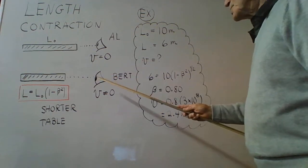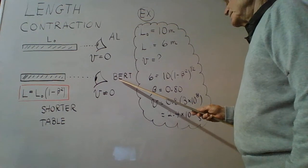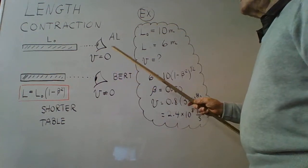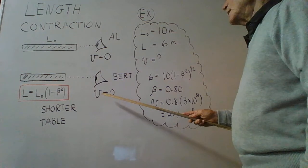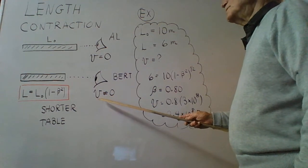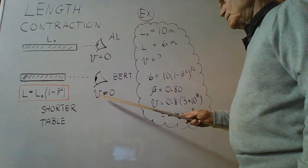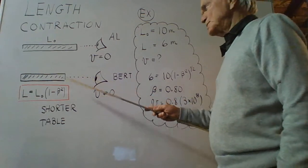A different observer, let's call him Bert, is looking at the same table, but Bert has a speed relative to the table. Bert is moving relative to the table. V is not zero.